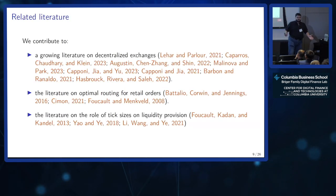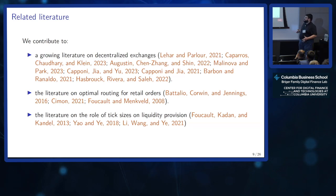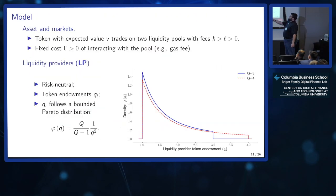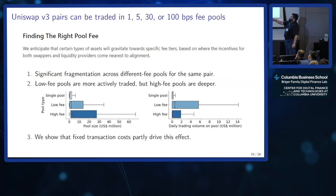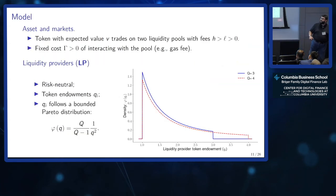There's a growing literature on this. I'm coming from the economics space, so I'm citing mostly econ papers, but people in the audience have contributed to this as well, and we also relate to the more classical market microstructure and liquidity literature. We have a very simple model: there's only one token with expected value V, trading on two liquidity pools.